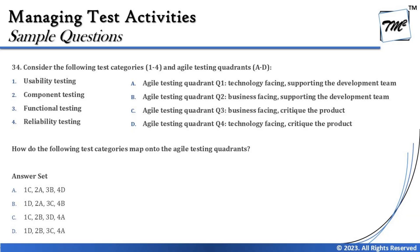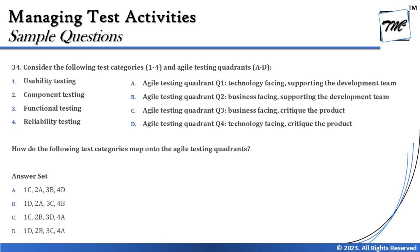The next question is a match-the-following about agile testing quadrants. The question says: consider the following test categories from 1 to 4 on the left, and the agile testing quadrants A to D. This type of question doesn't require tips and tricks — just knowledge of what happens in each quadrant, whether it is business-facing or technology-facing, and whether it supports the team or critiques the product.